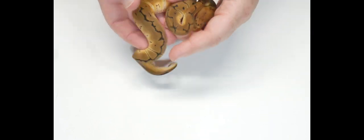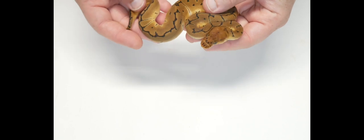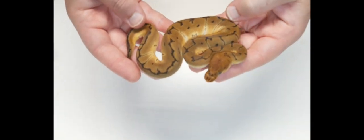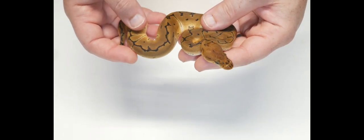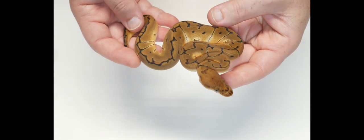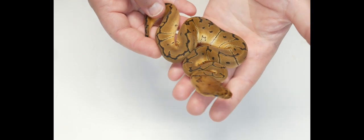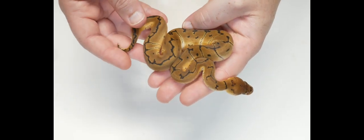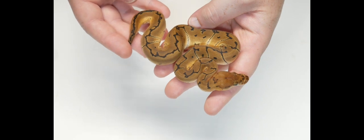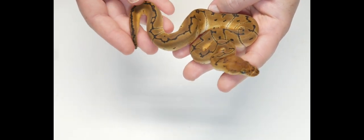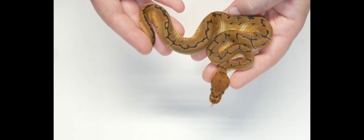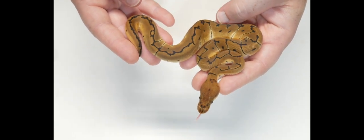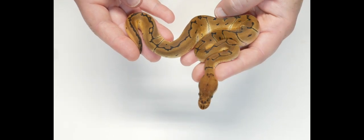This one is number five, this one is a holdback. This is a pinstripe clown, might have mystic - I'm not sure. It's a little lighter than the others, so it makes me think it might have mystic in it, but I'm just not sure. This one's a holdback - we are looking to make a pin clown and this is a female. Number five holdback, female pinstripe possible mystic clown.